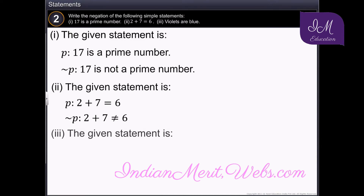The next statement is: violets are blue. The negation of the statement is: violets are not blue.